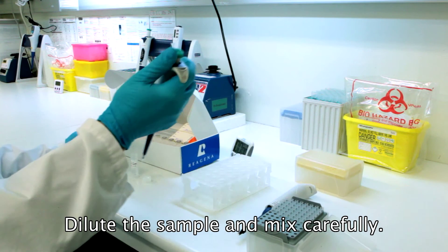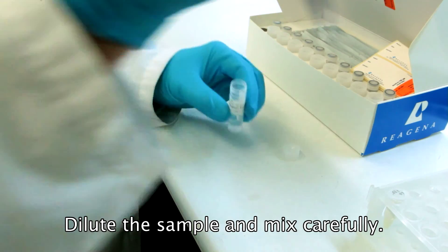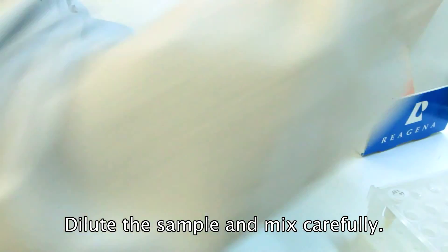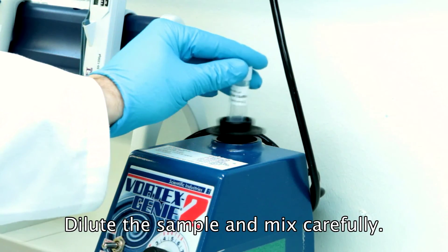Put 5 µl of serum or 20 µl of cerebrospinal fluid into the dilution buffer vial. Close the vial and mix it well by shaking or vortexing.